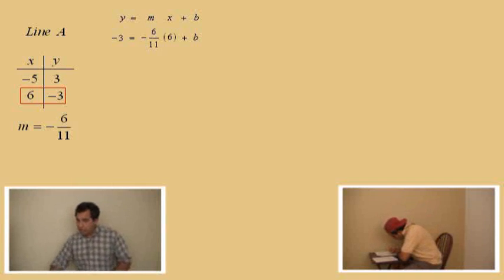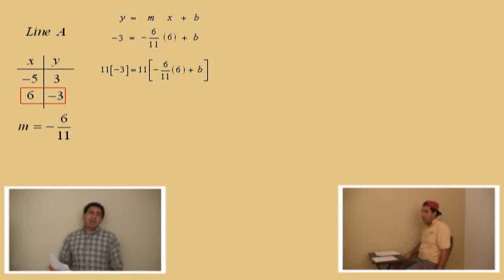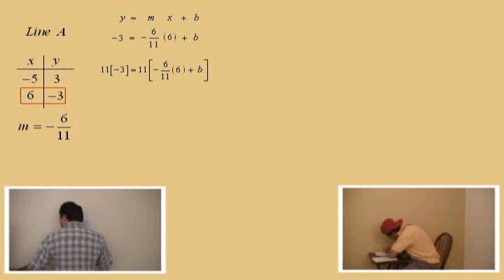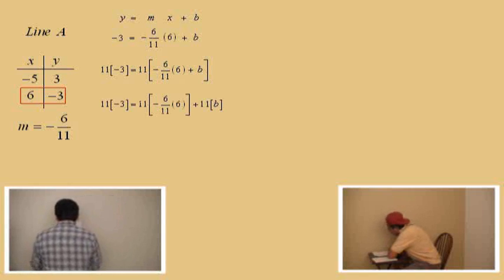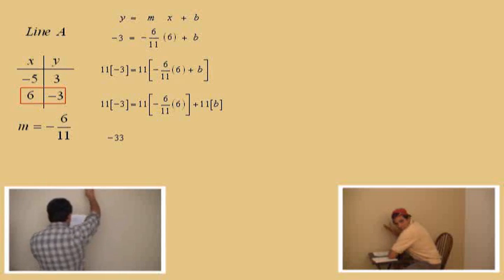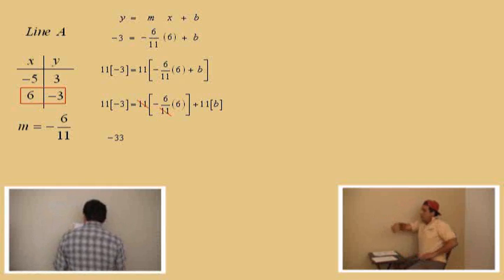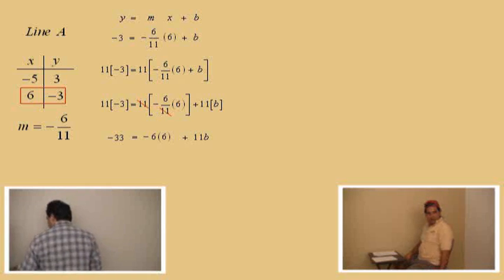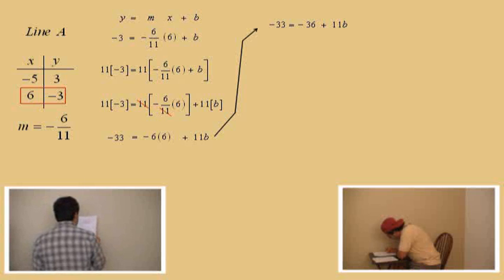By eleven — remember, this is all pre-algebra material and we're applying it in beginning algebra. Multiply both sides by eleven, and don't forget on the right-hand side we've got to distribute. Okay, what's on the left-hand side? Negative three. Now, on the right side of the equal sign, what happens to those elevens, Charlie? They cancel, leaving you with negative six times six. And then what's left over there? Eleven B. So we have negative thirty-three equals negative thirty-six plus eleven B.